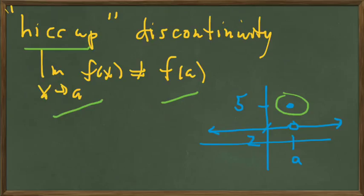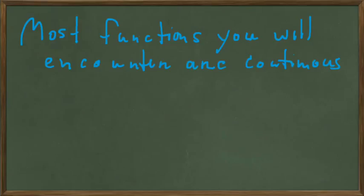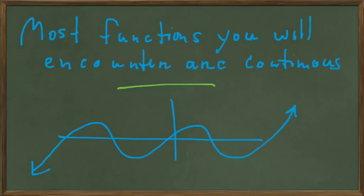The hiccup discontinuity is also called a removable discontinuity — a point has been removed from where it belongs and placed elsewhere. Finally, most functions you will encounter are continuous. A continuous function can be drawn in one piece without lifting your pen from the paper. In application problems you'll encounter later, you need to know when a function is discontinuous and avoid those spots when applying techniques in later courses.